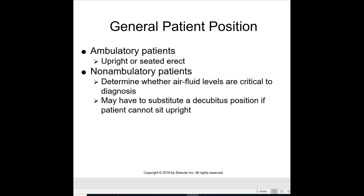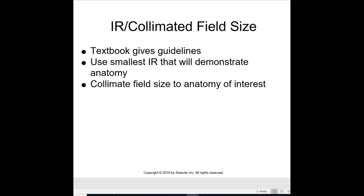For general patient positioning, ambulatory patients are upright or seated. For non-ambulatory patients, determine whether air-fluid levels are critical to the diagnosis. You may have to substitute the decubitus position if the patient cannot sit upright. For the IR and collimated field, the textbook gives guidelines — use the smallest IR that demonstrates the anatomy and collimate the field size to the area of interest.